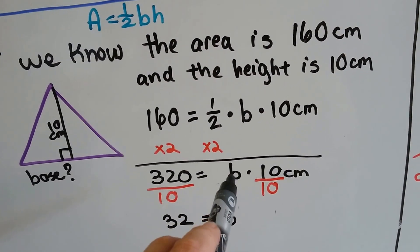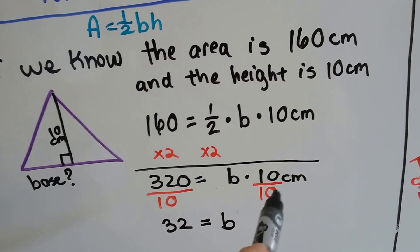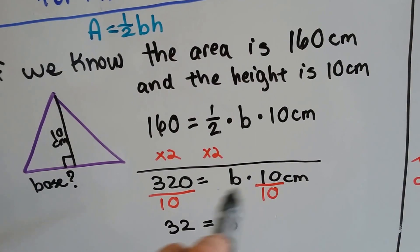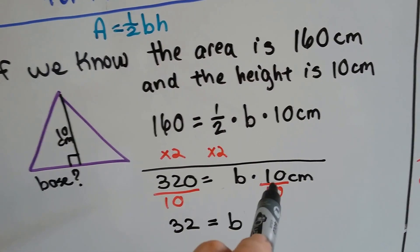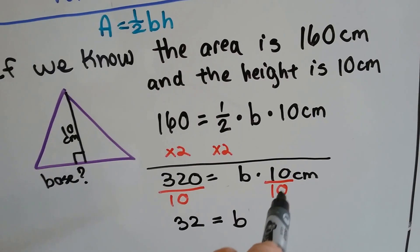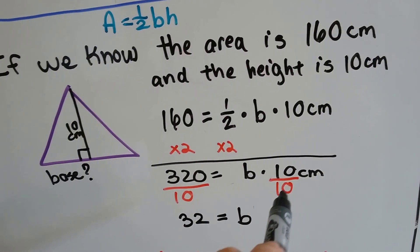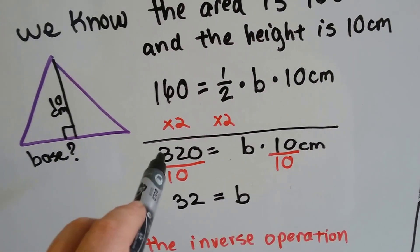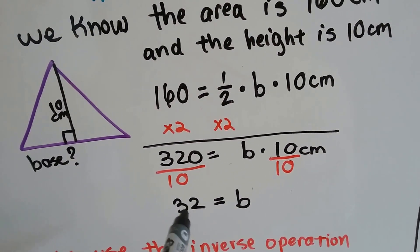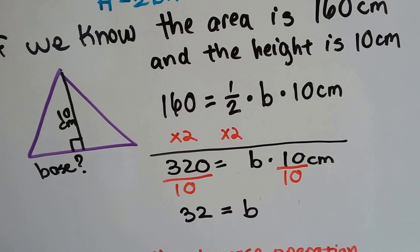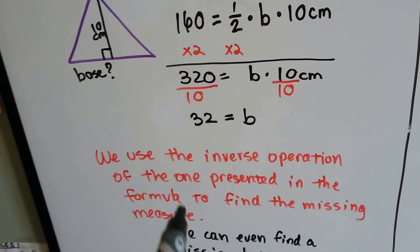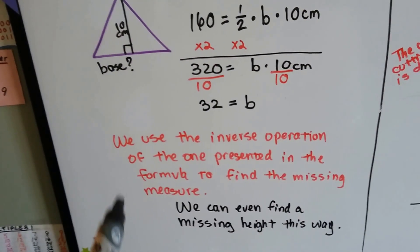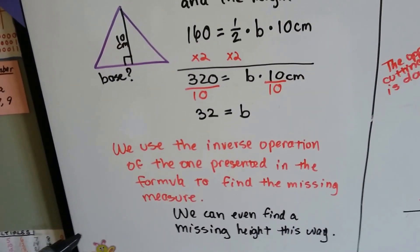Now we want to get b alone still, so instead of multiplication, the inverse would be division. We use division on both sides of the equal sign to get rid of the 10 centimeters. We divide the 10 by 10 and the 320 by 10, and this cancels itself out. 320 divided by 10 is 32. We know that the base is 32. We use the inverse operation of the one presented in the formula to find the missing measure — we can find the height this way too.